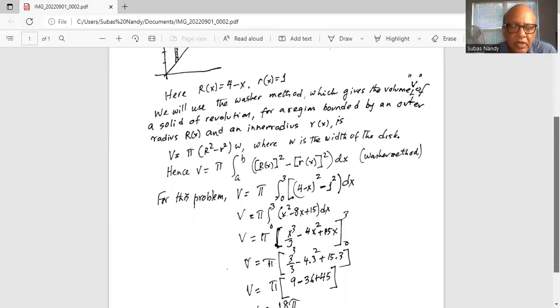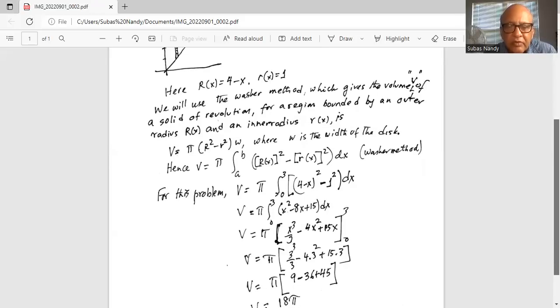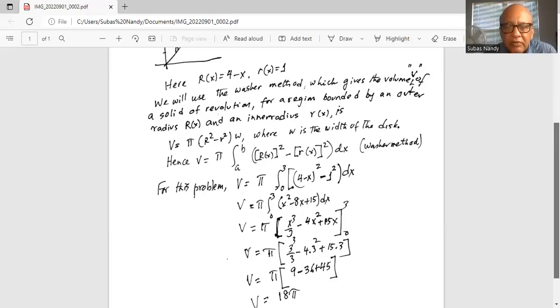So we plug in 3 for x which is pi 3 cubed divided by 3 minus 4 times 3 square plus 15 times 3. So 3 cubed is divided by 3 is 3 square or 9 minus 4 times 9 is 36 plus 45.